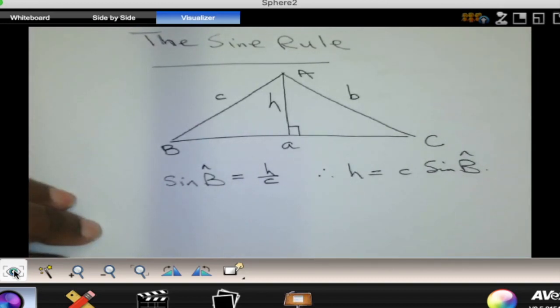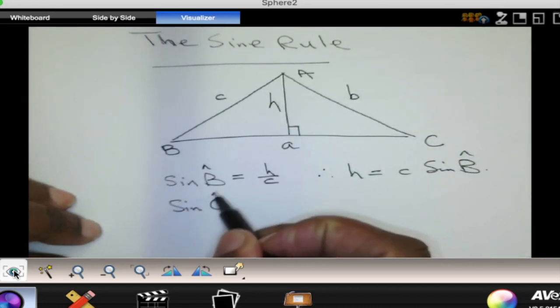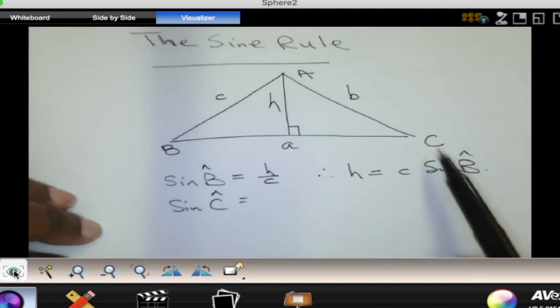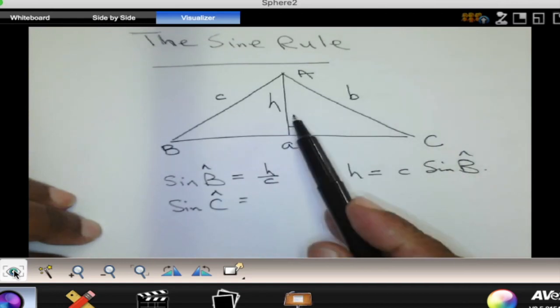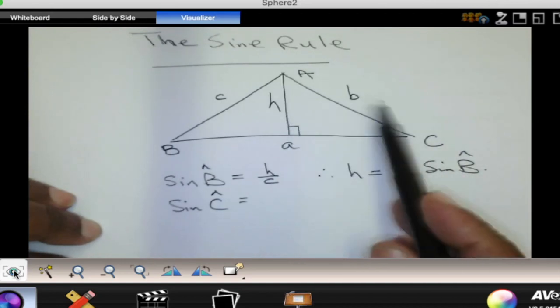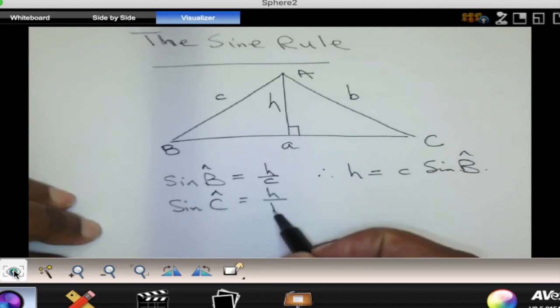Similarly, from the other triangle you can work out the sine of angle C. So sine of angle C is the opposite side which is h divided by the hypotenuse, so this is h divided by b.